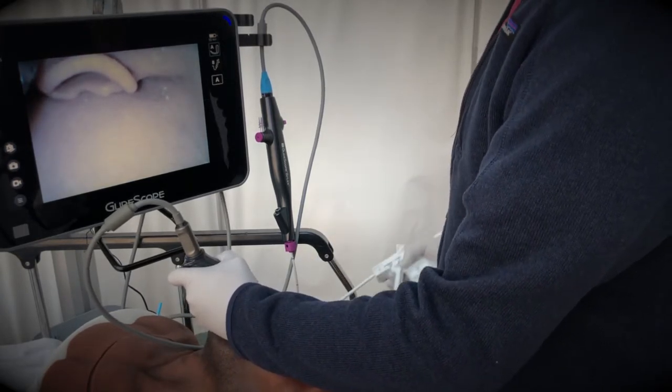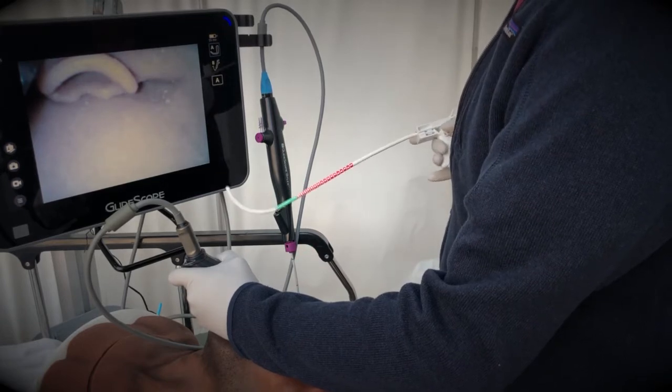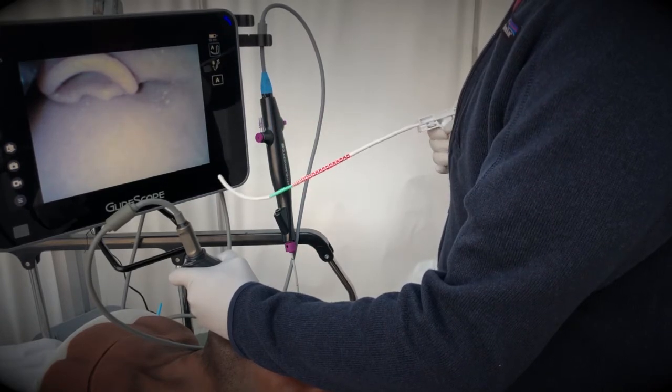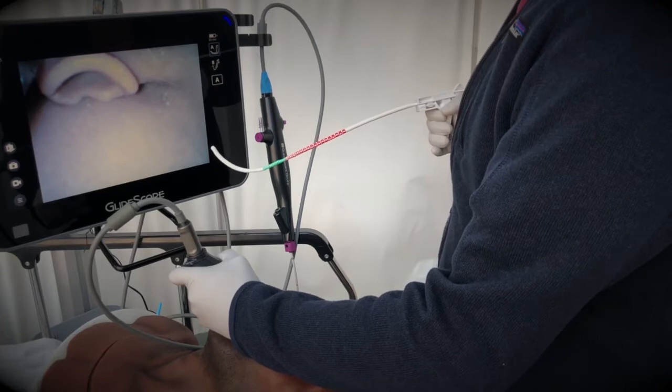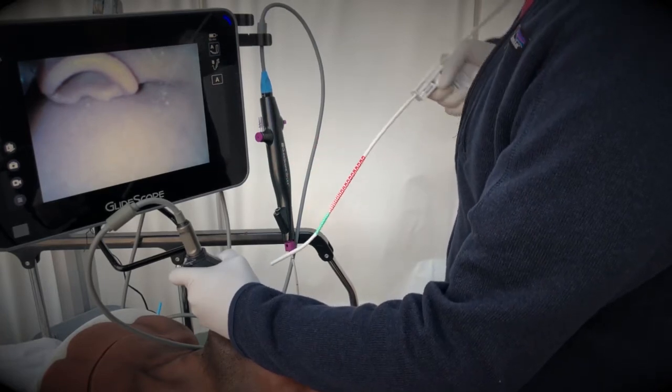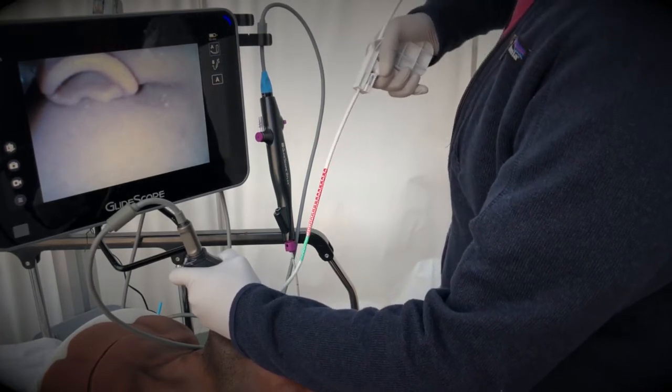So we're going to troubleshoot this view by inserting our Total Control Introducer Articulating Bougie. Squeeze the trigger straight out the tip, enter the mouth,